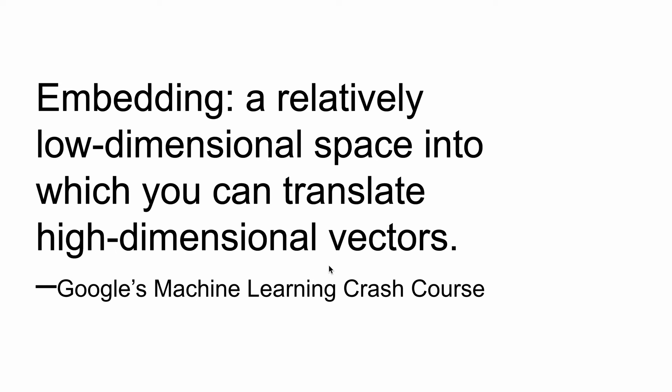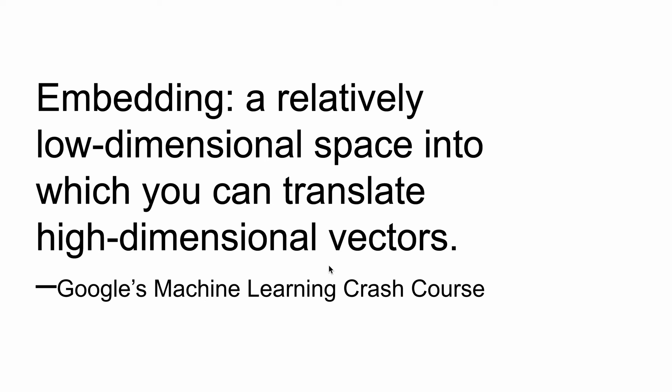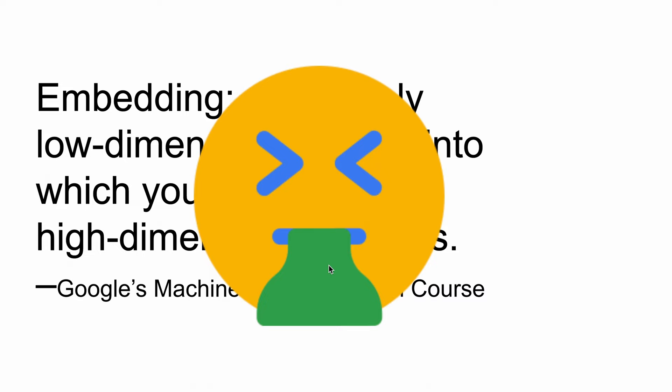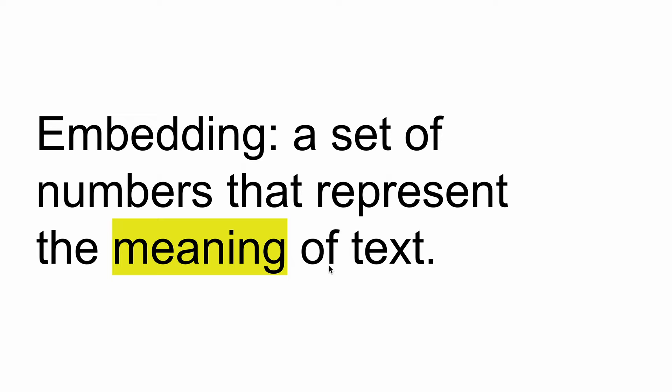Before we jump in, let's start with a primer on document embeddings. Here's a definition from Google's machine learning course: 'Embedding — a relatively low dimensional space into which you can translate high dimensional vectors.' Now that definition is terrible, so I'm going to give you Kevin's definition of embeddings: a set of numbers that represents the meaning of text.